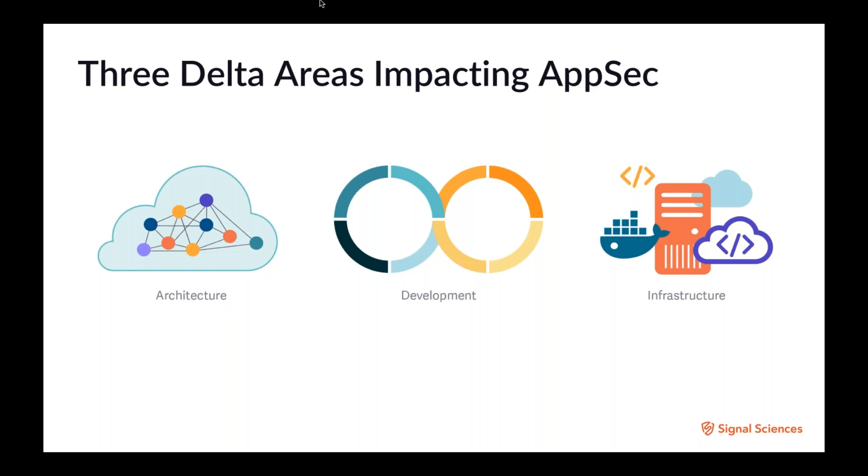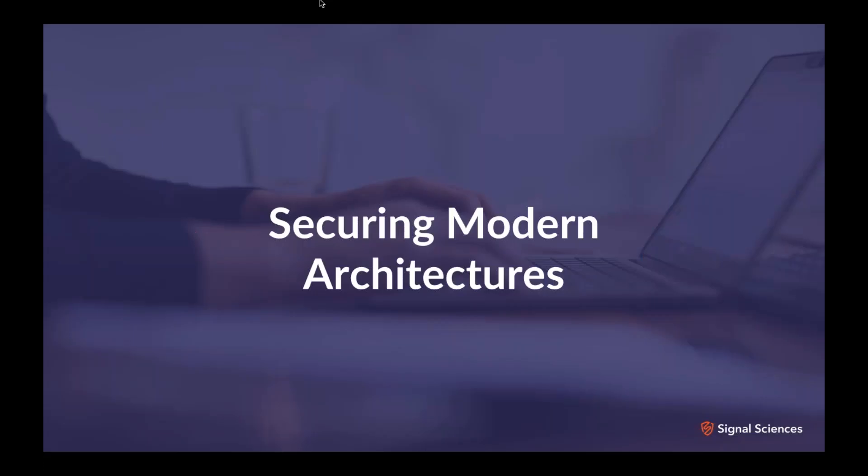So again, I'm going to talk about the three delta areas impacting application security: architecture, development, and infrastructure. And basically, I'm going to talk about how these changes in these three areas have necessitated a new approach to web application security, and namely, that there needs to be a new breed of web application firewall. So again, we use data from Signal Sciences customers. And we see that one of the most important aspects of WAF is the ability to deploy in a wide variety of architecture and infrastructure models. This provides not only the most reliable coverage, but actually also meets the needs of any organization delivering modern applications.